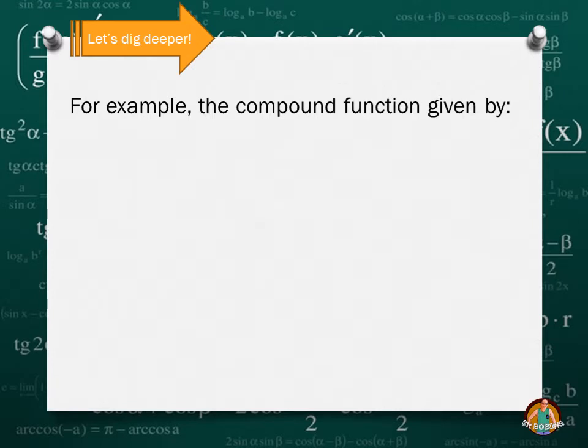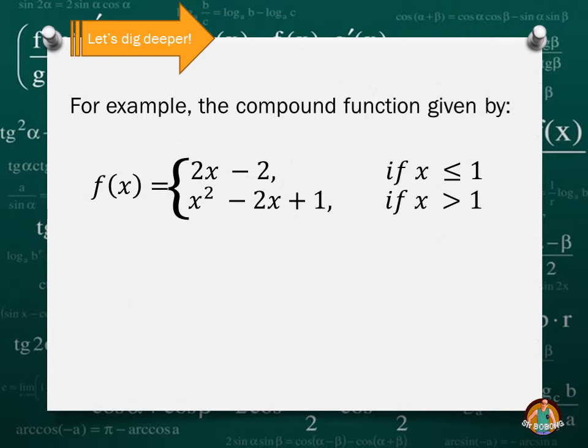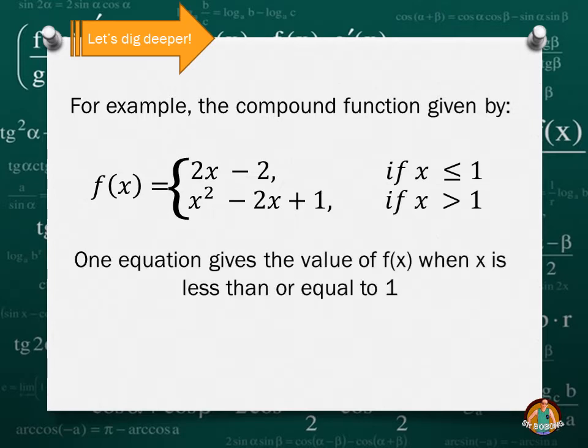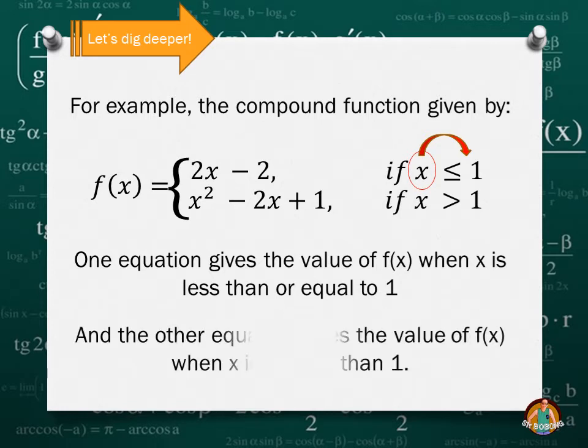For example, the compound function given by f(x) equals 2x minus 2 if x is less than or equal to 1, and x squared minus 2x plus 1 if x is greater than 1. Notice that we have two sub-functions, but take note that each function has connection to our domain x. So let's discuss each function.